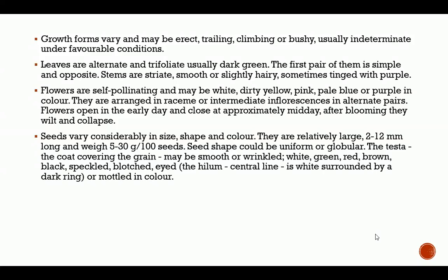Seeds vary considerably in size, shape, and colour. They are relatively large — 2 to 12 millimetres long — and weigh 5 to 30 grams per 100 seeds. Seed shape could be uniform or globular. The seed coat may be smooth or wrinkled, and may be white, green, red, brown, black, speckled, or blushed.